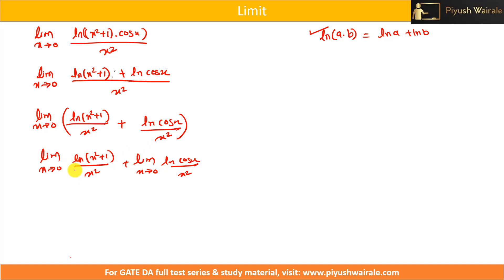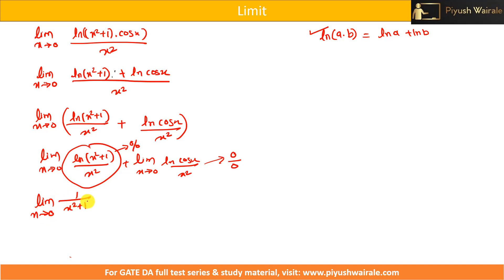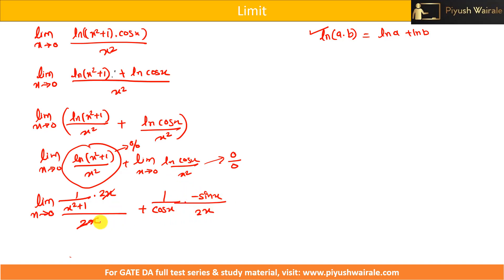Applying L'Hôpital's rule to each part: for ln(x² + 1)/x², derivative of numerator is [1/(x² + 1)]·2x, derivative of denominator is 2x — the 2x cancels, giving 1/(x² + 1). For ln(cos x)/x², derivative of numerator is [1/cos x]·(−sin x), derivative of denominator is 2x, giving −sin x/(cos x·2x) = −tan x/(2x). So we have limit x→0 of [1/(x² + 1)] + limit x→0 of [−tan x/(2x)].